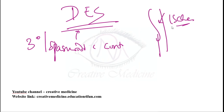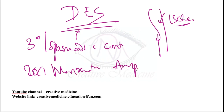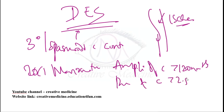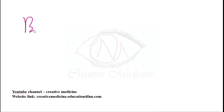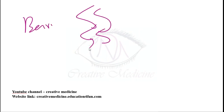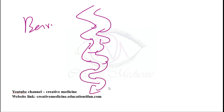In diffuse esophageal spasm, the patient has chest pain with dysphagia. Investigation of choice is manometry. Diagnostic criteria: amplitude of contractions more than 120 mmHg, duration of contractions more than 2.5 seconds. On barium swallow, corkscrew appearance, pseudo-diverticula, or rosary bead appearance is seen.